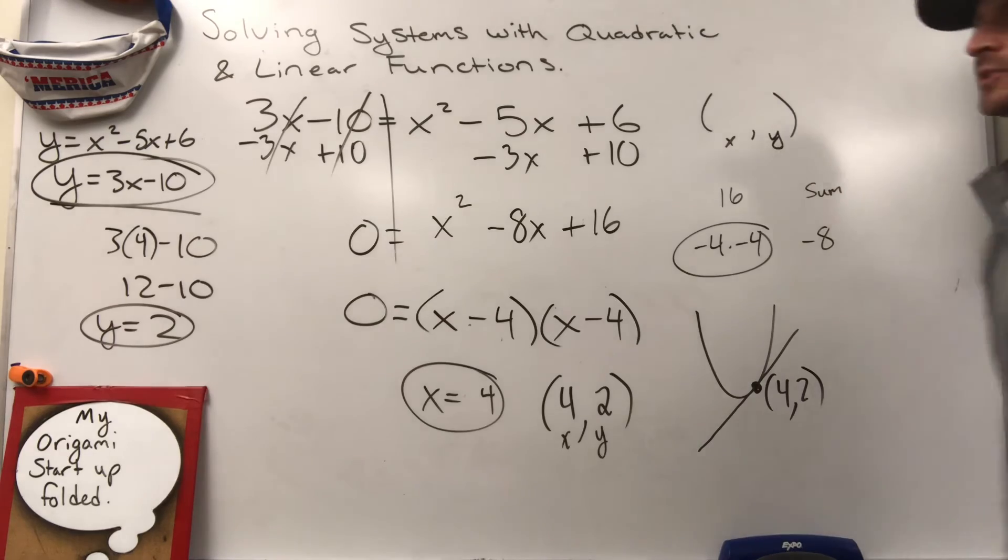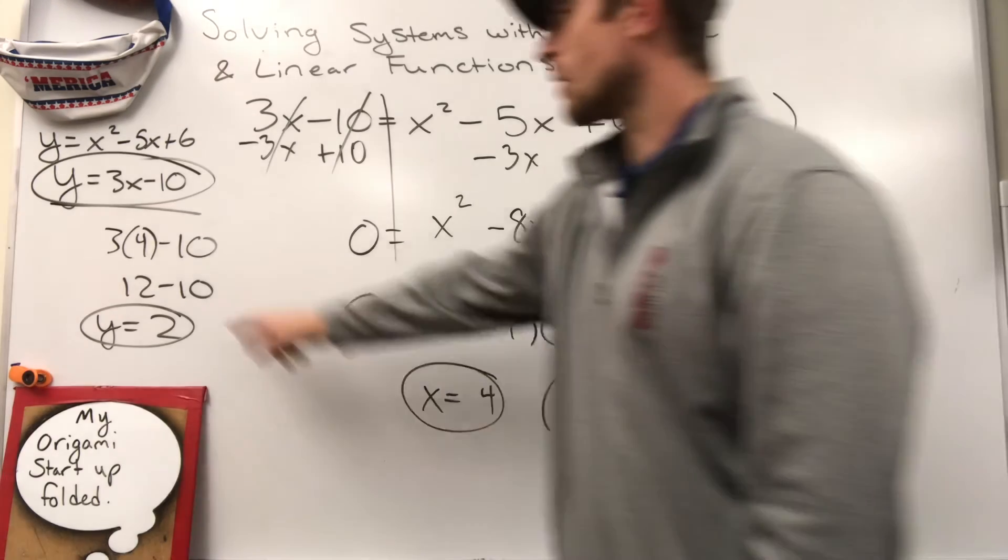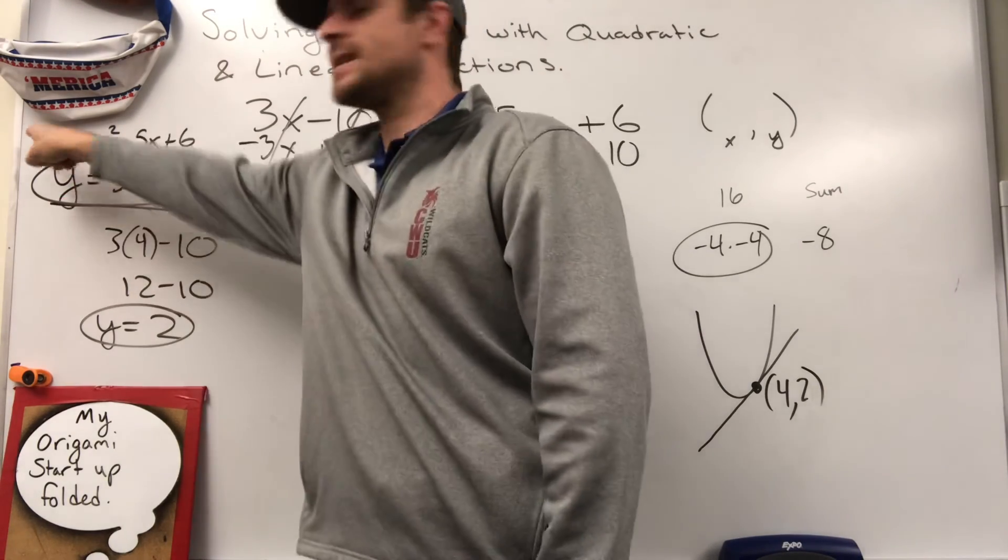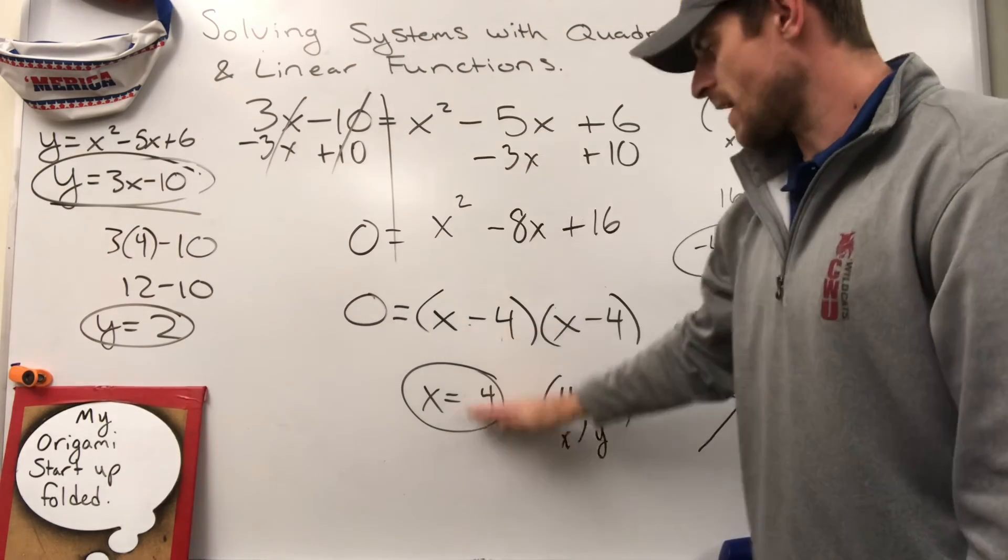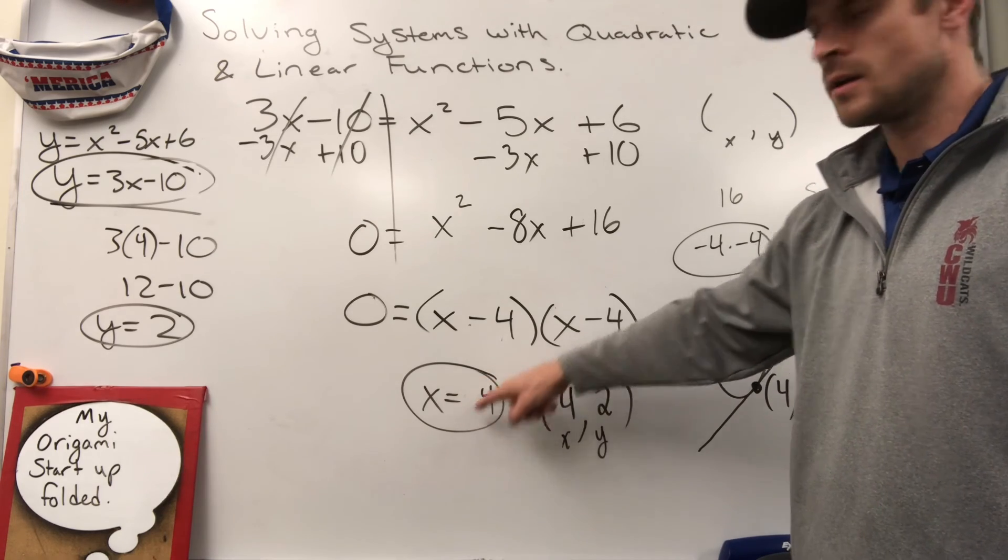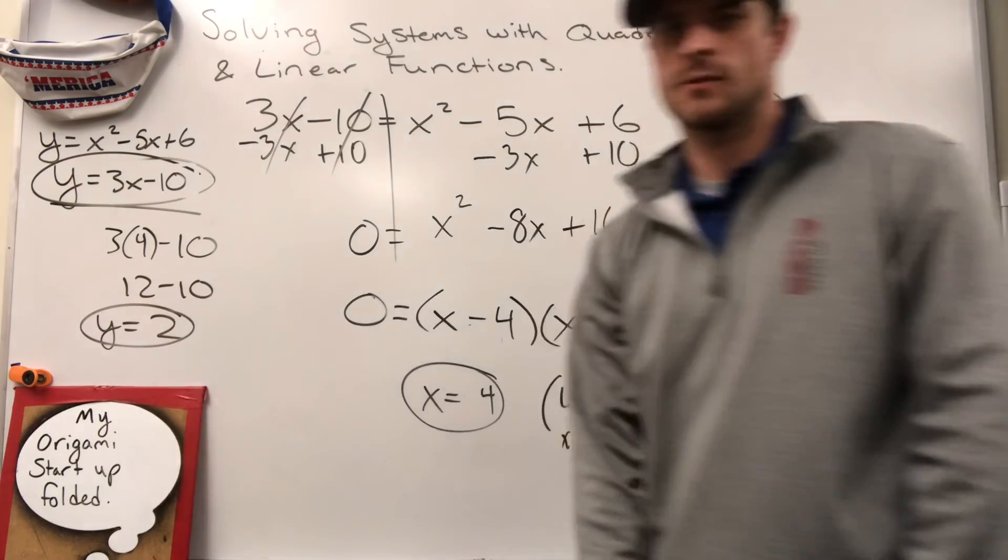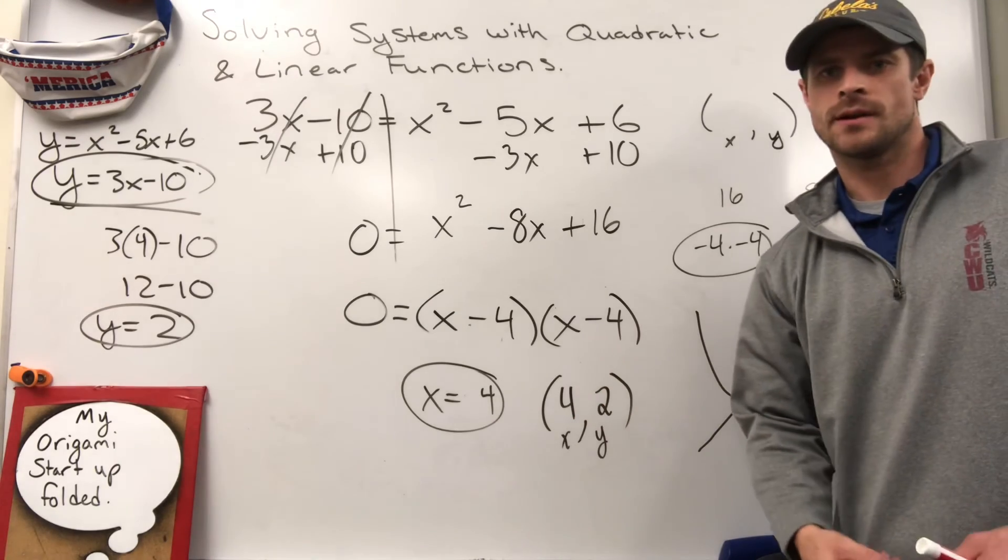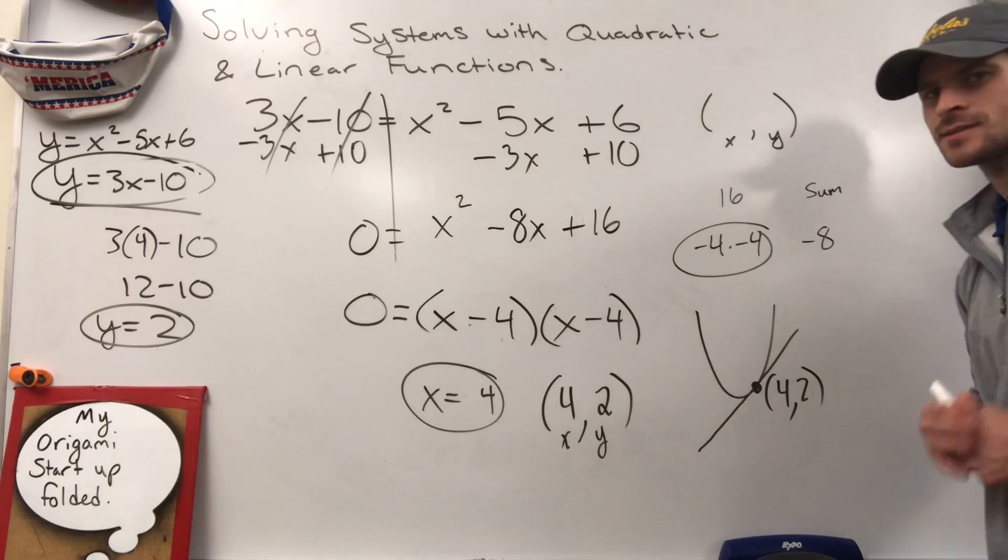Substitution method. You take the two equations that are originally provided to you. You take the part that is equal to a single variable, and you replace or sub it out to the other equation. You solve that equation for the variable that's still there. Once you know that number, plug it back into one of the original equations to solve for the second variable. Once you have both variables, you have an ordered pair. Study hard, and good luck on your upcoming test. You got this.